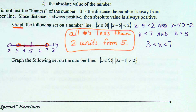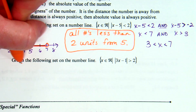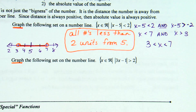Example 2 — graph the following set on a number line. This time it's all real numbers such that the absolute value of 3x minus 1 is greater than 2. What's different? It's a greater than sign, which means we're going to set up an or statement. If it's an or statement, what's the graph going to do? It's going to go out. What else is different? There's a coefficient on the x — it's 3x.